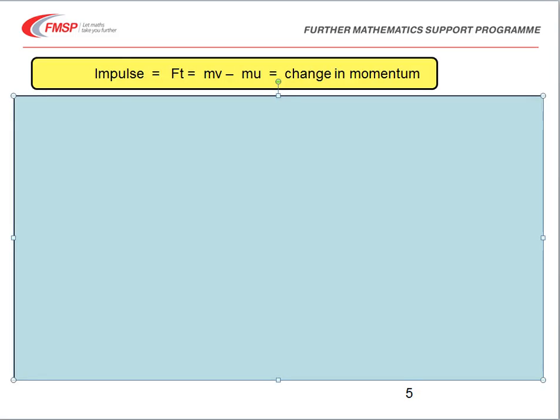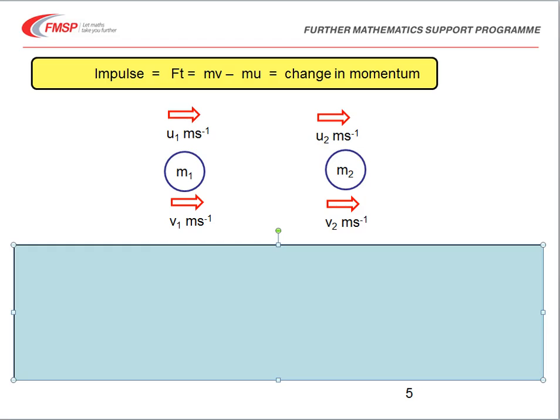Using the principle that impulse equals change in momentum, we can look at what happens in a collision. Here we have two objects, M1 and M2, with initial velocities U1 and U2, and after a collision, final velocities V1 and V2. In the collision, each body experiences an equal and opposite force for the same time, so an equal and opposite impulse.